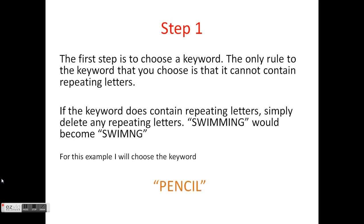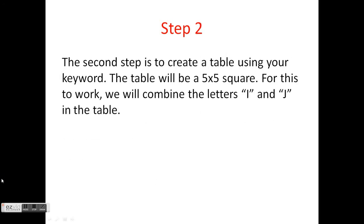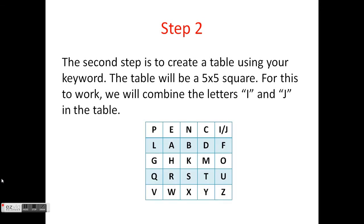But for the purpose of this tutorial, I will use the keyword pencil. So after you've chosen a keyword, the next step is to put that keyword into a 5x5 square along with the rest of the letters in the alphabet. You combine the I and the J into one box, and the table will look something like this.